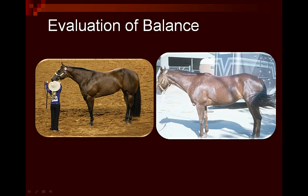Looking at the next area of balance — the length of the neck — remember we want the neck to be equal to or longer than those other areas, and we prefer the top line to be twice as long as that of the underline. The bay mare is very long in her neck. She has a good 2-to-1 ratio from top to bottom, and the length of her head is shorter than these other areas. The sorrel mare does have a fairly long neck; however, the ratio of top to bottom is nearly more equal, so not quite as desirable a shape to her neck.